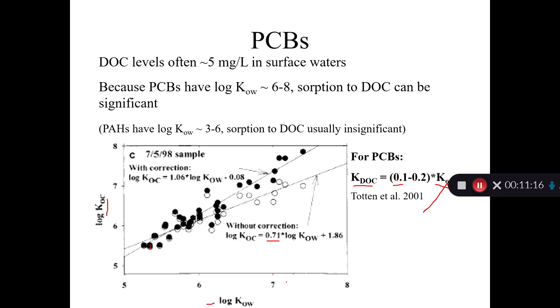And so there's a much bigger correction factor for data points over here and very little correction factor for data points over there, and that changes your slope. So when you make that correction, lo and behold, you get a slope pretty close to one. So this is evidence that the DOC is binding to or absorbing some of the PCBs.